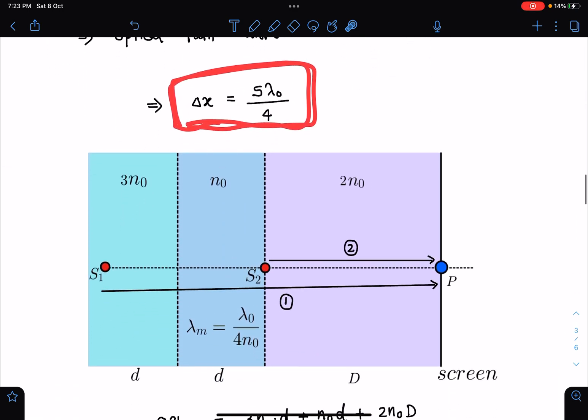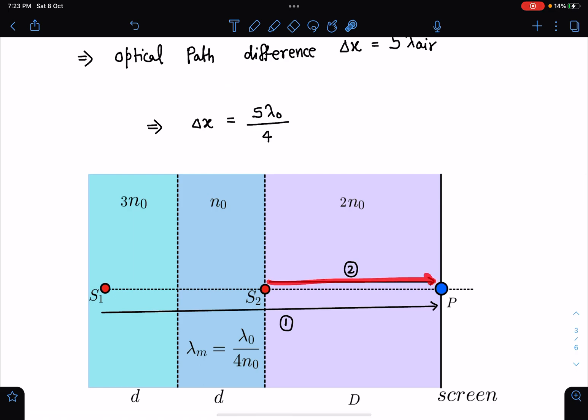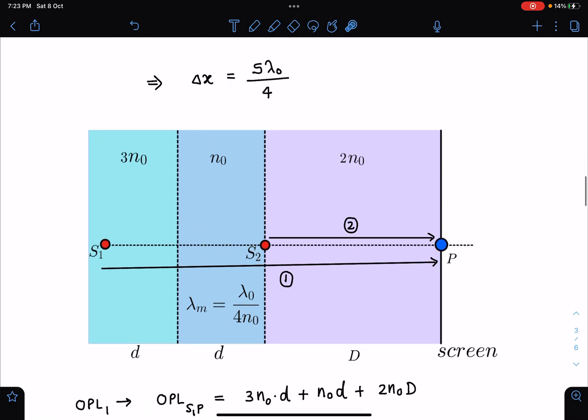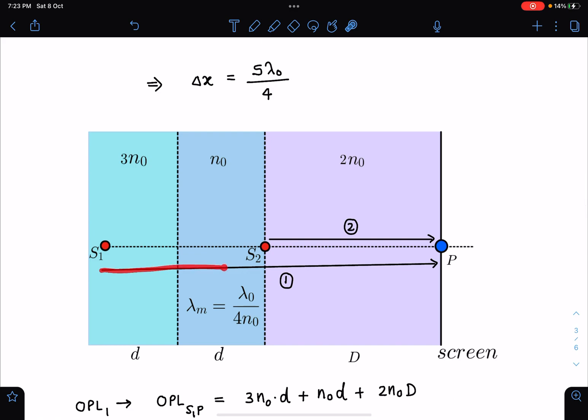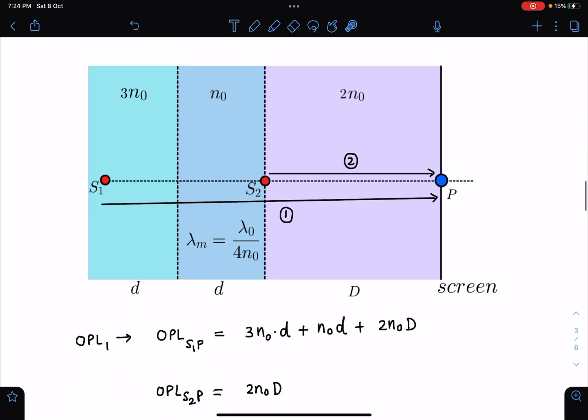Now let's come to the original system here. One light ray directly is reaching point P and another light ray is reaching from s1 to P through two different mediums. So in this part you can say if I write optical path length from s1 to P, here it is traveling distance of d in the medium of 3 n0, so corresponding to this path length will become 3 n0 d. Then in the medium of n0 distance of d again, so this will become n0 into d. And finally in the medium of 2 n0 it is traveling a distance of capital D, so 2 n0 into D. Whereas for optical path length 2 here, OPL2, I can write simply 2 n0 into D.